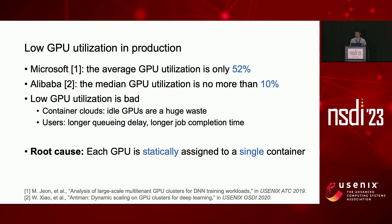A common problem in production GPU clusters is low GPU utilization. A recent study on a production GPU cluster by Microsoft showed that the median GPU utilization is only 52%. Another measurement on a production GPU cluster at Alibaba shows even lower GPU utilization — the median GPU utilization is no more than 10%. Low GPU utilization is bad for both container clouds and users. For container clouds, idle GPUs are a huge waste. For users, submitted jobs have to wait in the queue even when many GPUs are not fully utilized.